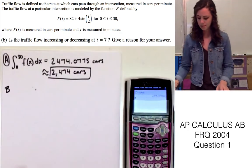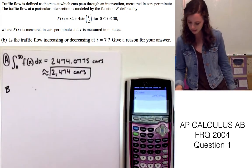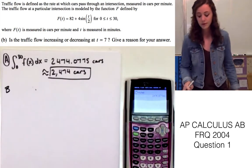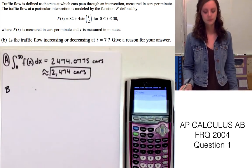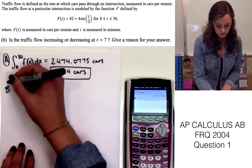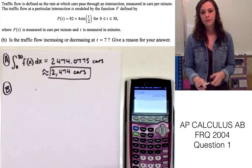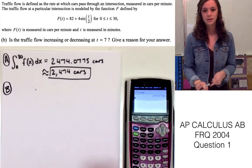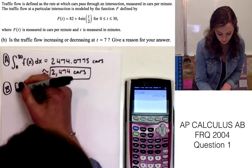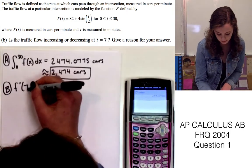All right, so for part B, it's asking, is the traffic flow increasing or decreasing at t = 7? And we have to give a reason for our answer. So since it's asking about the flow of the traffic, we're going to want to take the derivative of f(x), since that's the rate. So we're going to want f'(7).